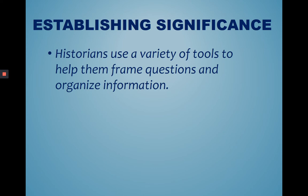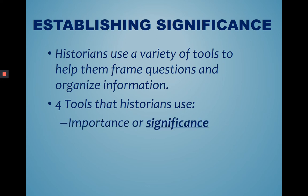Historians use a variety of tools to help them frame questions and organize information. There are four tools that historians use. So once we have framed our topic and we have begun to do our research, we need to find specific pieces of evidence. These pieces of evidence we need to determine their importance or significance, how they relate to the social institutions of the time, time, when did they take place, when were they created, and space, in what kind of area were they created and how will they help us. And we're going to go into each of those four tools in a little more detail.